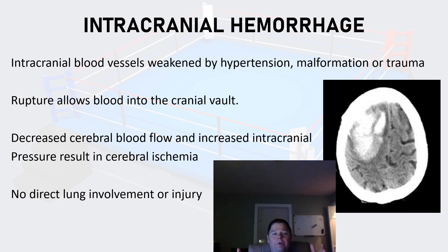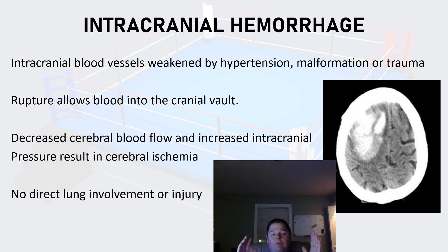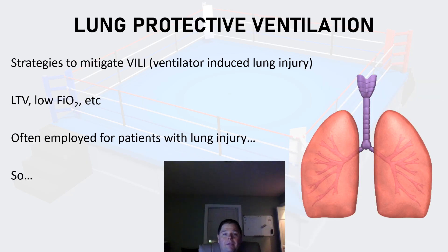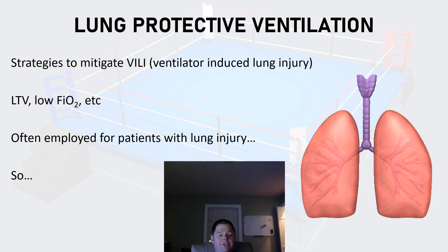An important point about intracranial hemorrhage is that unless the patient aspirates either after the event or during airway management, they don't have any lung involvement. So this is the greatest patient in the world to evaluate for using a different ventilator strategy in someone who doesn't have any lung injury — because he shouldn't have any lung injury.